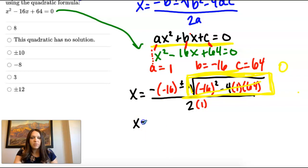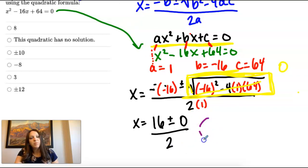So I'm going to replace this whole thing with 0. So now I have x equals negative, negative, becomes a positive 16. Plus or minus 0, all divided by 2. Now, from this point, you would split the plus or minus.